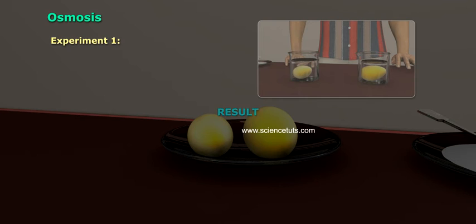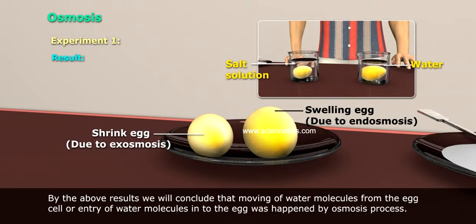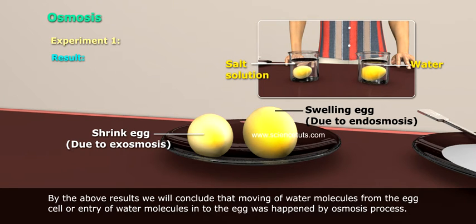Result: By the above results, we conclude that the movement of water molecules from the egg cell or the entry of water molecules into the egg was brought about by the osmosis process.